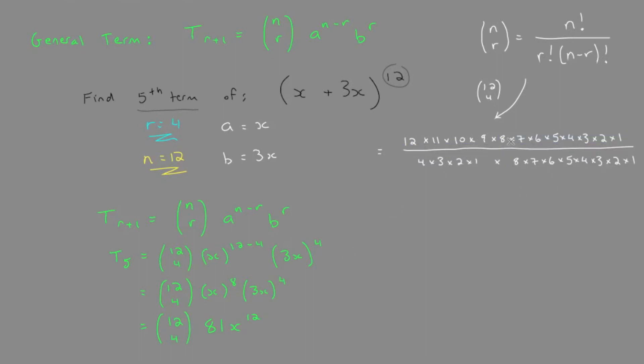When you get more practice with this, notice the 8 factorial on the bottom would cancel all of the numbers past 8 on the top. And so this makes it simpler. This would give us 495.